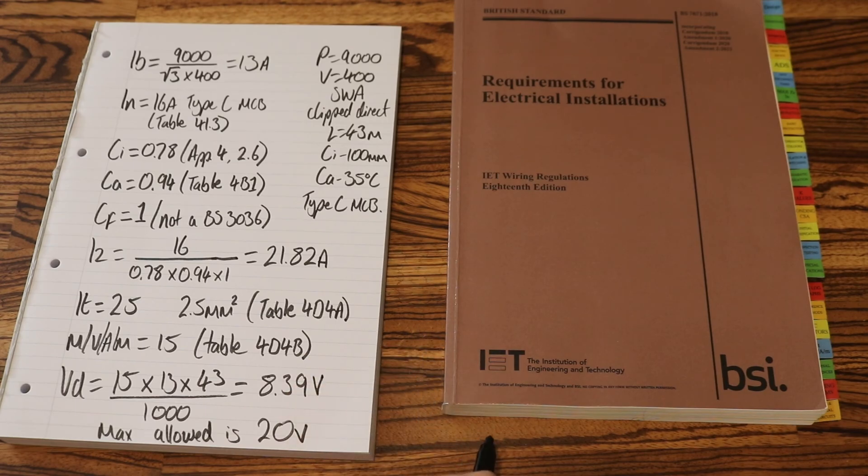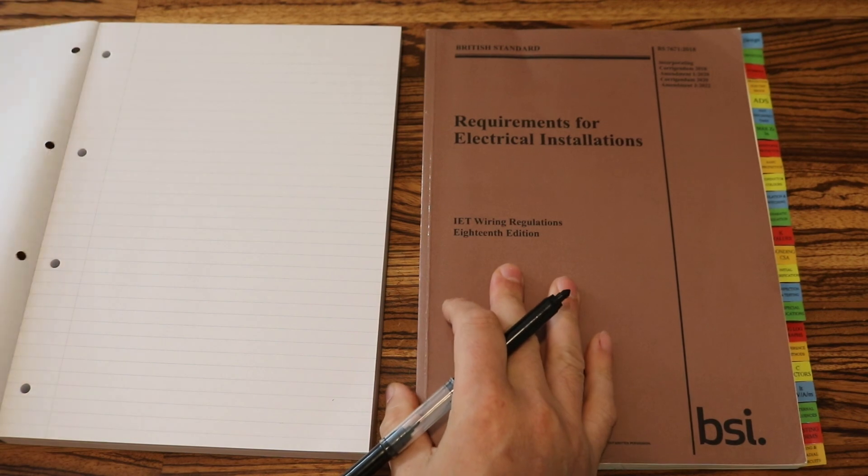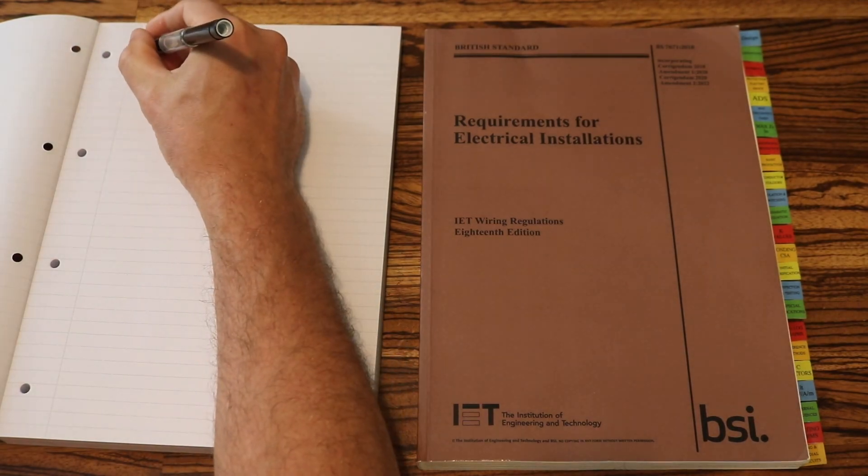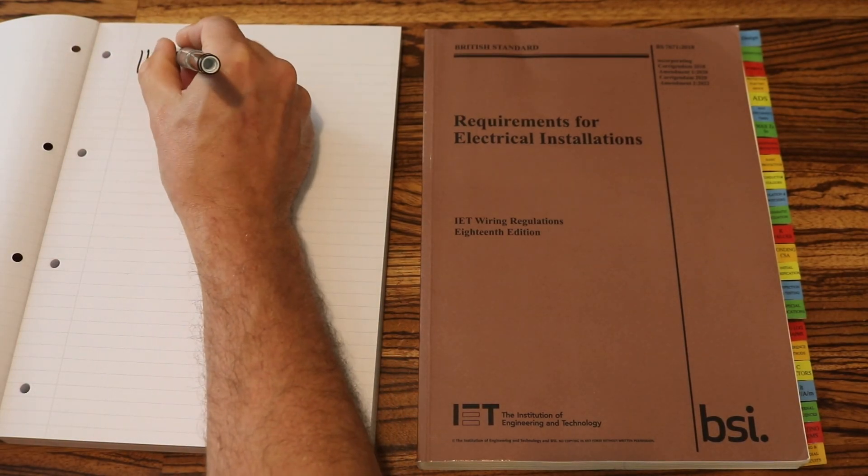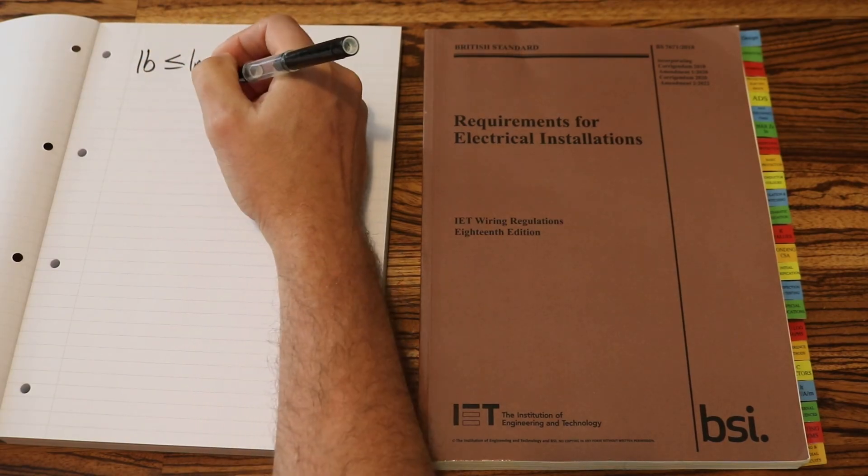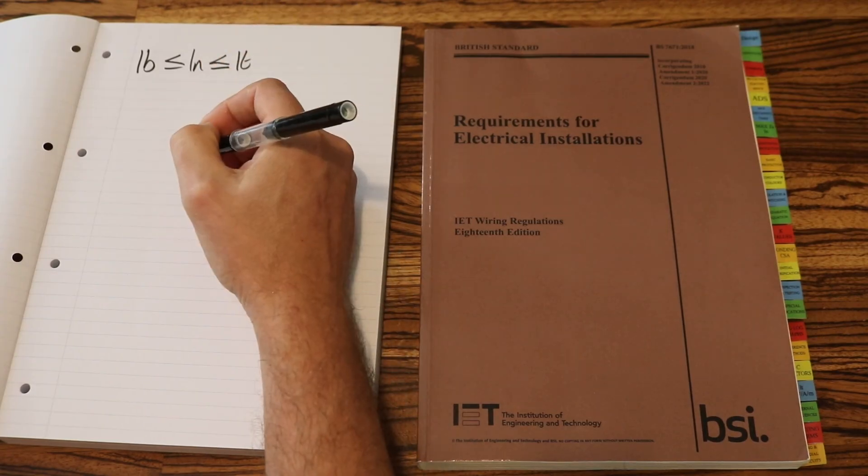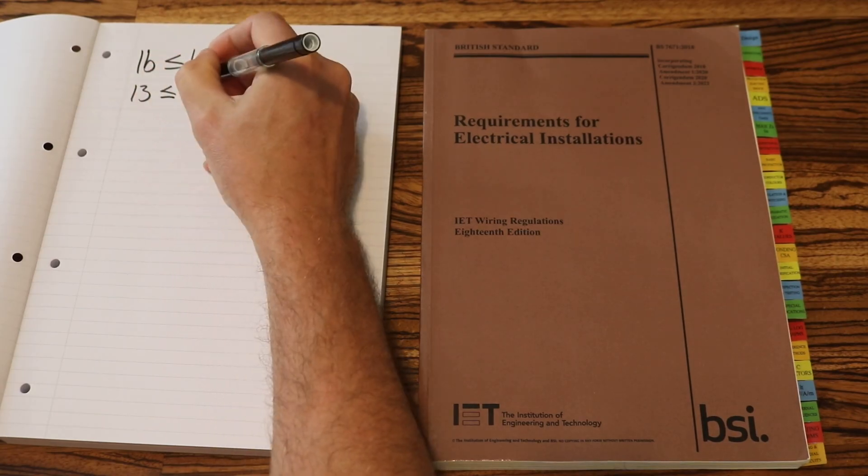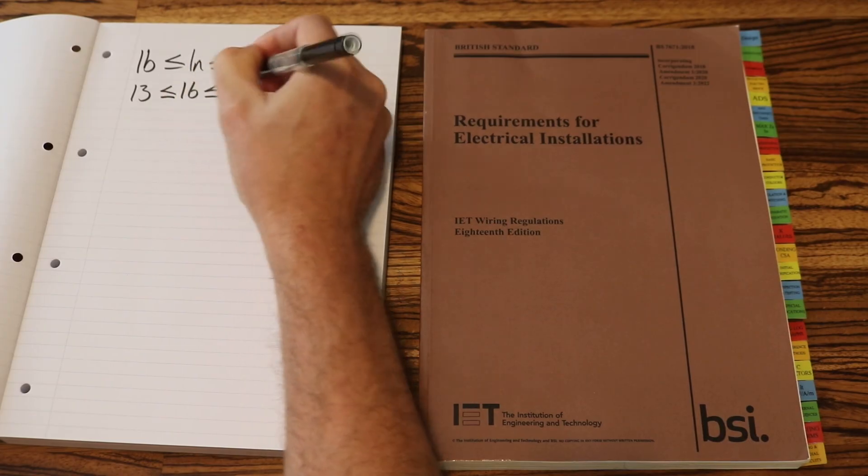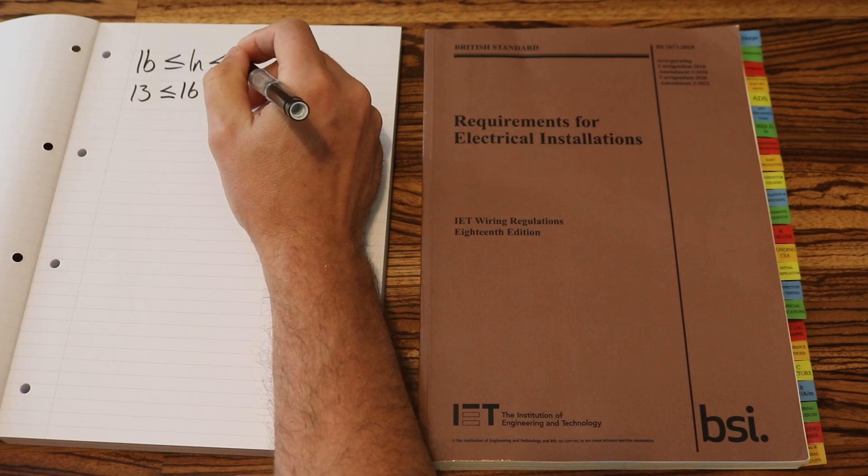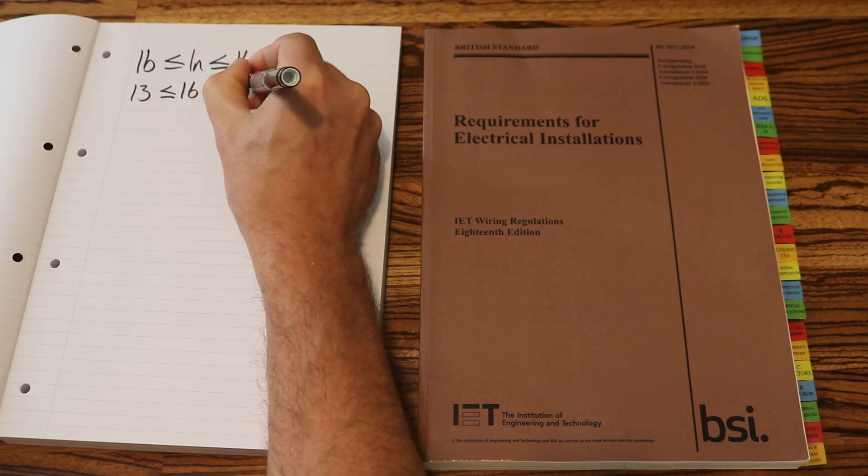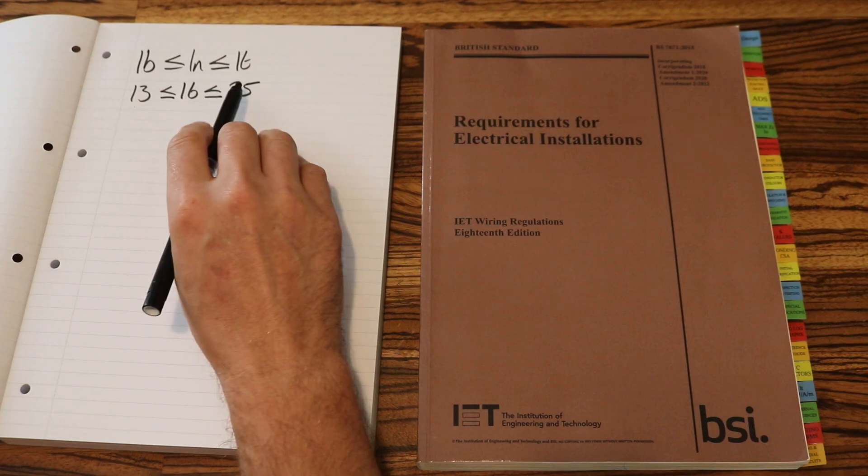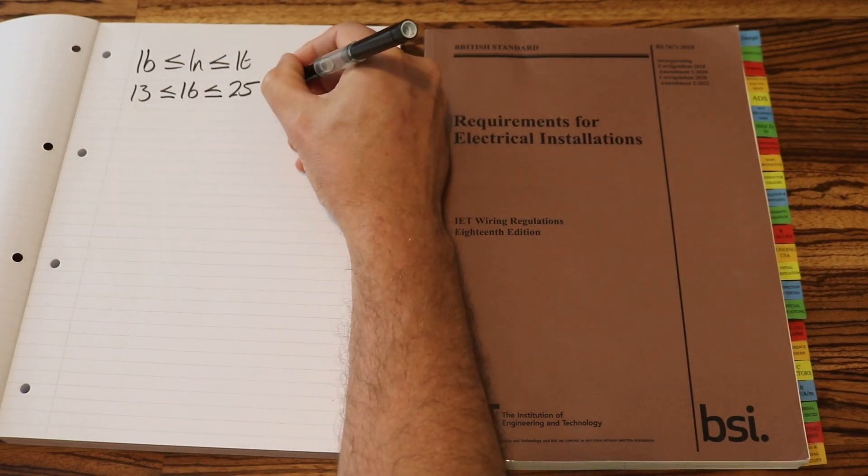Our last bit of cable calculation. Remember, it's not really a formula, it's more like a statement. IB is equal to less than IN, which is equal to less than IT. Let's input our values. So that was 13, IN was 16, and our IT was 25. So is 13 equal to less than 16? Which it is, and 16 equal to less than 25. Which it is, and that is correct.